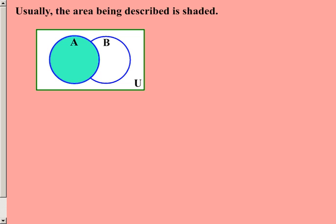Now usually the area that is being described in a particular set is going to be shaded. As you'll see, just a generic Venn diagram won't have anything shaded, but if a particular area is being referred to, it is shaded as you are seeing there.